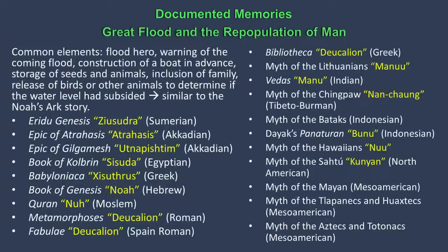The event is probably also documented in the memories of people around the world. The first is the stories of great floods and the repopulation of man. The overwhelming consistency among these legends and myths found in distant parts of the earth indicates they were derived from a common origin. The common elements in the stories are: a flood hero, warning of the coming flood, construction of a boat in advance, storage of seeds and animals, inclusion of family, and release of birds or other animals to determine if the water level had subsided — similar to the Noah's Ark story.